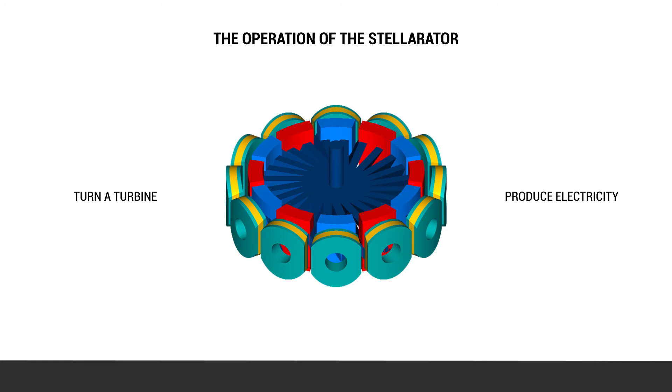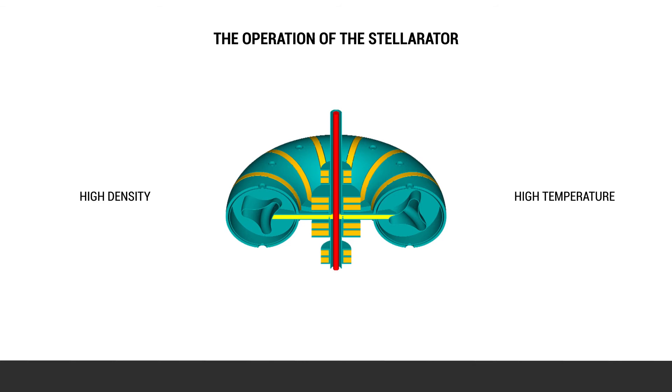This is done by running water through a molten lithium bath. The compact stellarator produces high density, high temperature plasma inside a toroidal shaped vacuum chamber by heating a gas with a high frequency gyrotron.